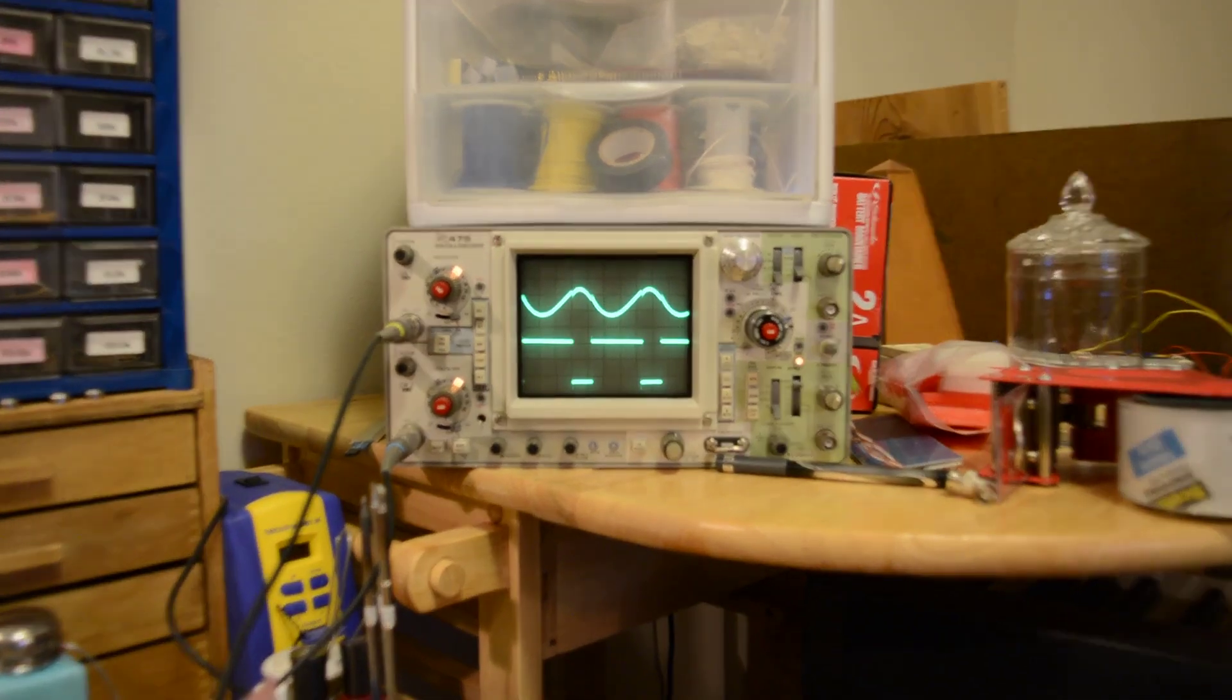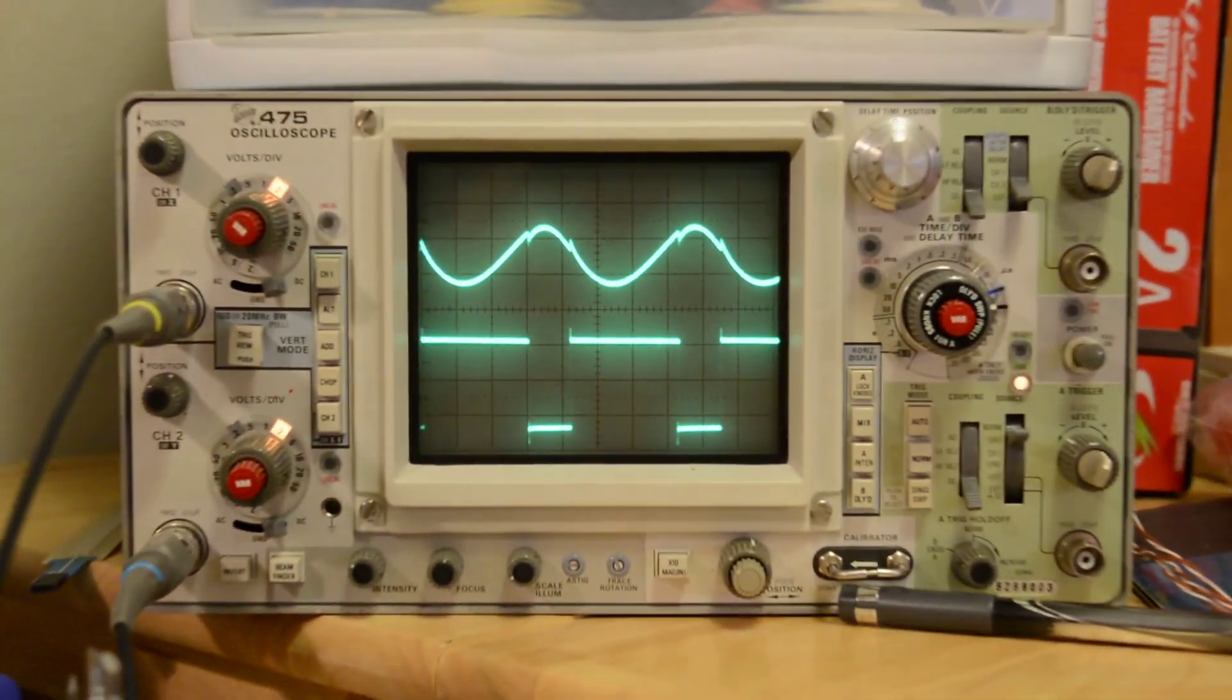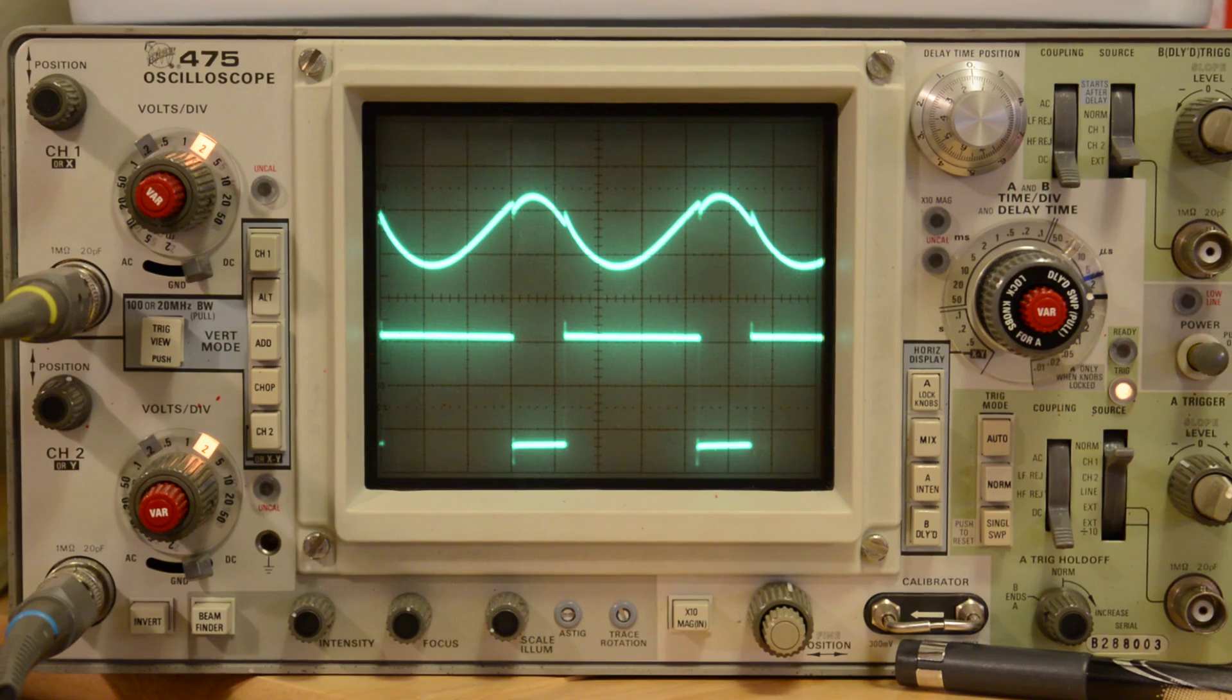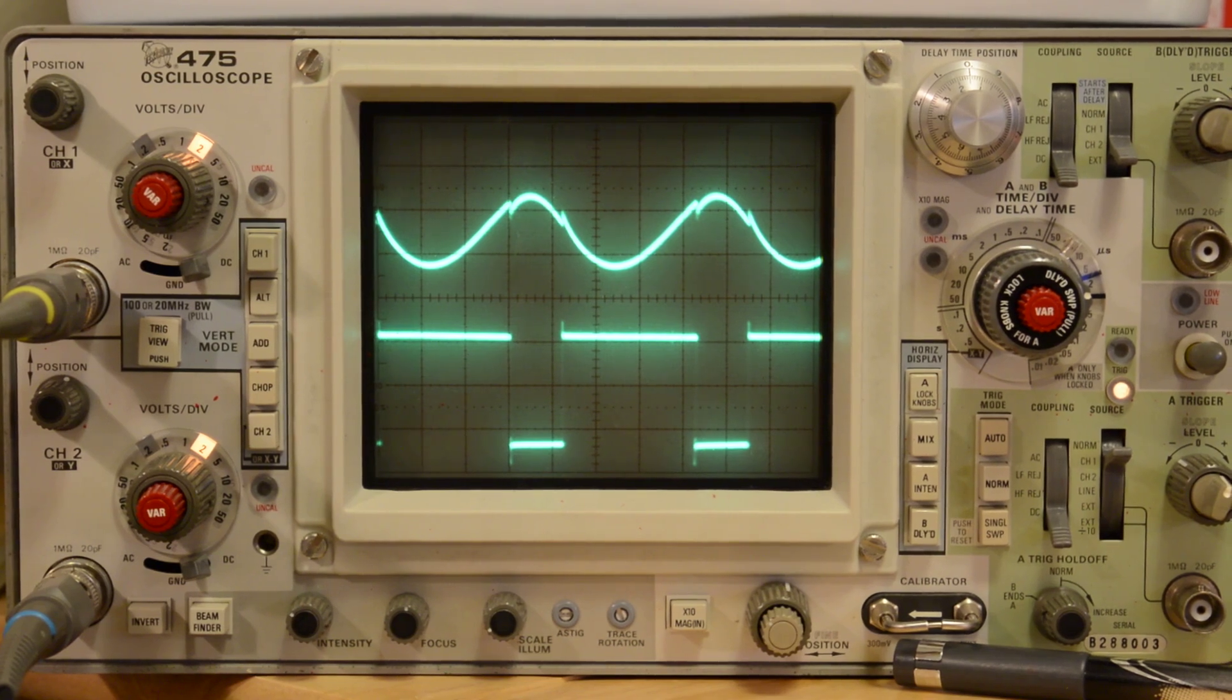The top trace is the input and the bottom trace is the output of the Schmidt trigger. Notice the glitches in the input. These are being caused by the switching of the output.